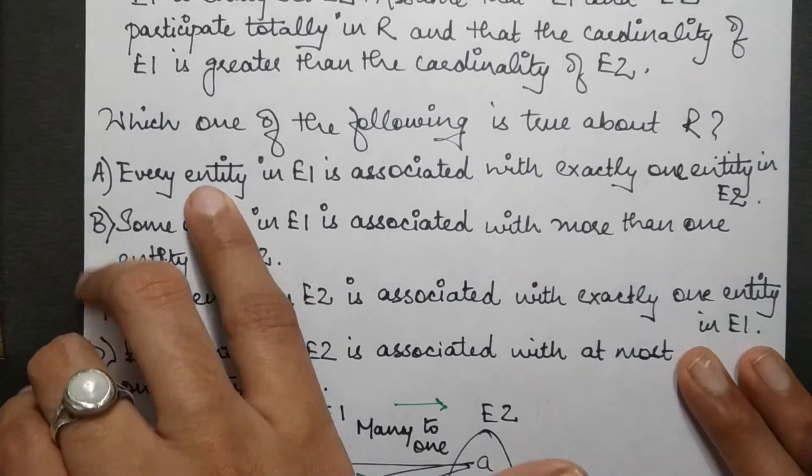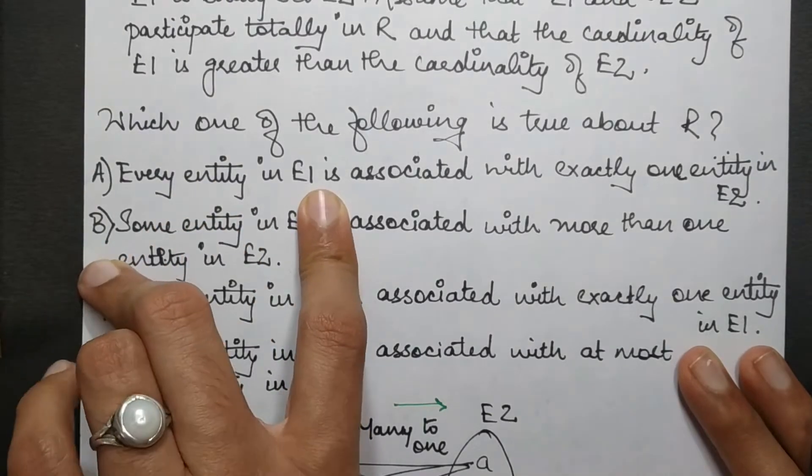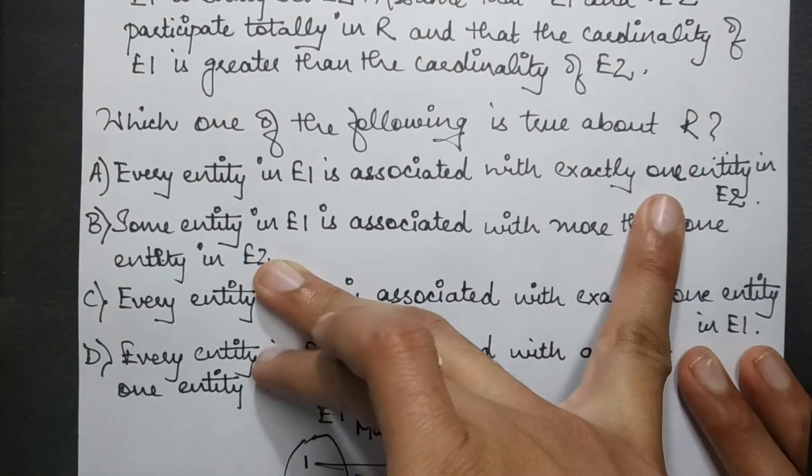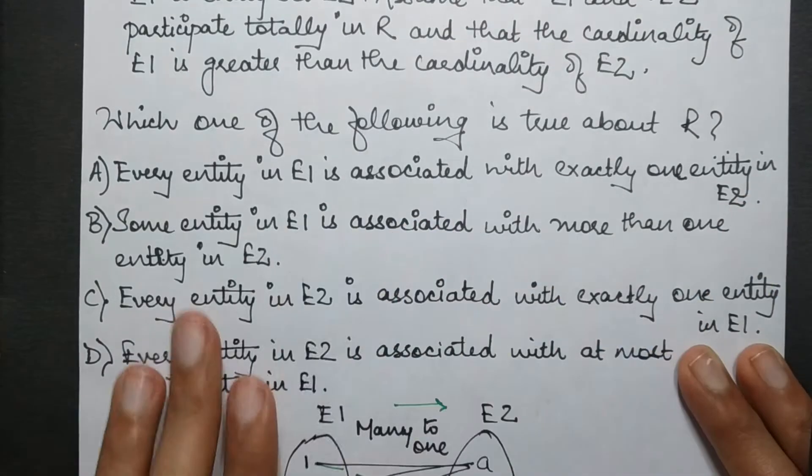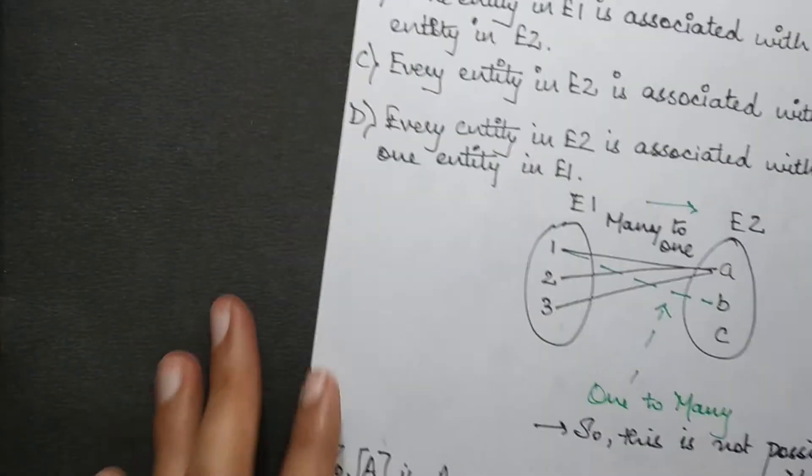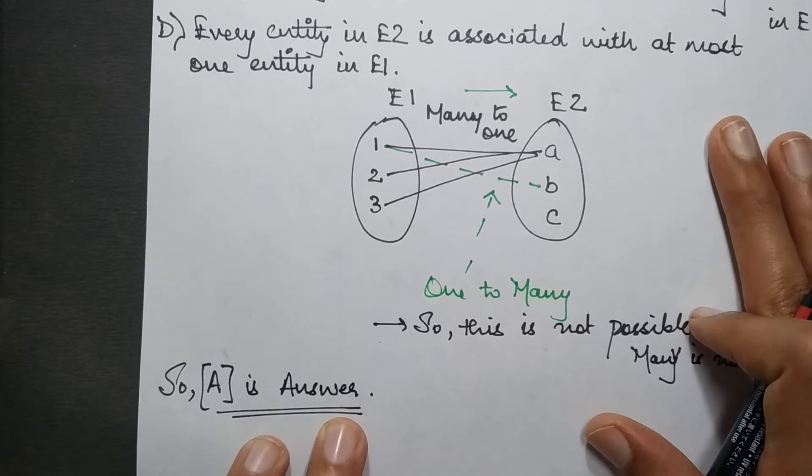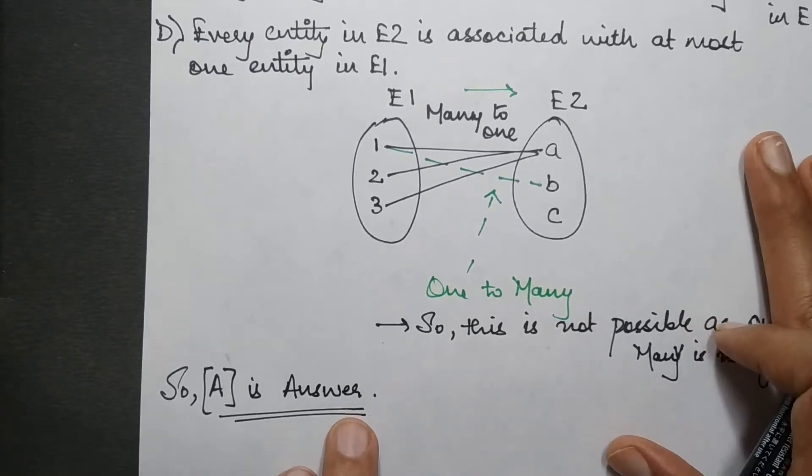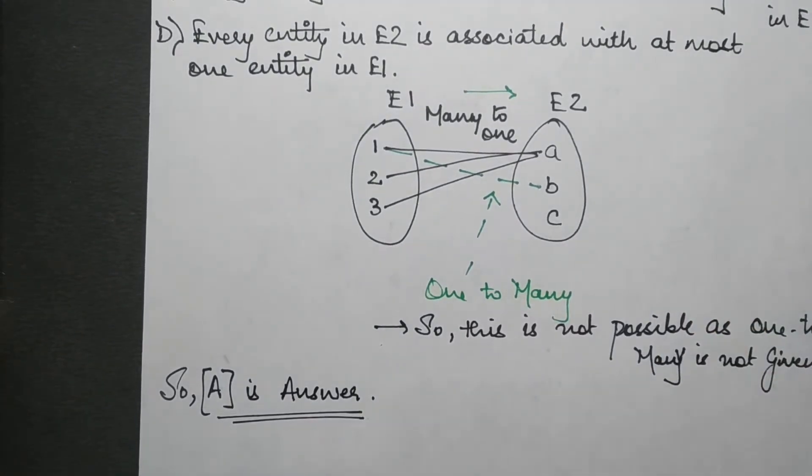So for me it's the A part. Every entity in E1 is associated with exactly one entity in E2. So the answer for this question is A part. So we mark the A part for this question. That's all for this question.